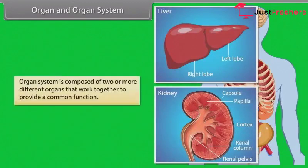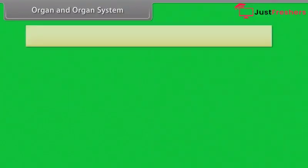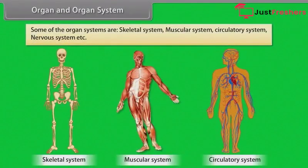Organ system is composed of two or more different organs that work together to provide a common function. Some of the organ systems are skeletal system, muscular system, circulatory system, nervous system, etc.